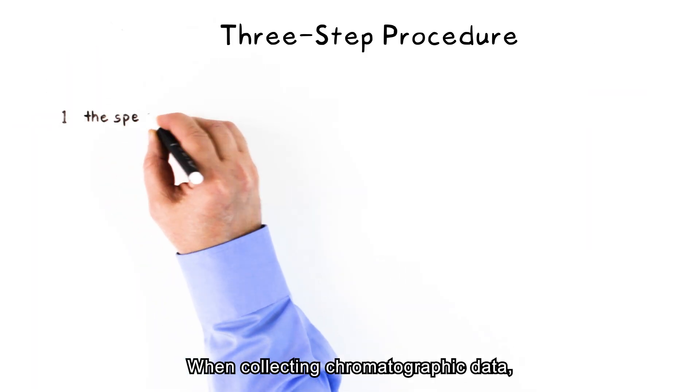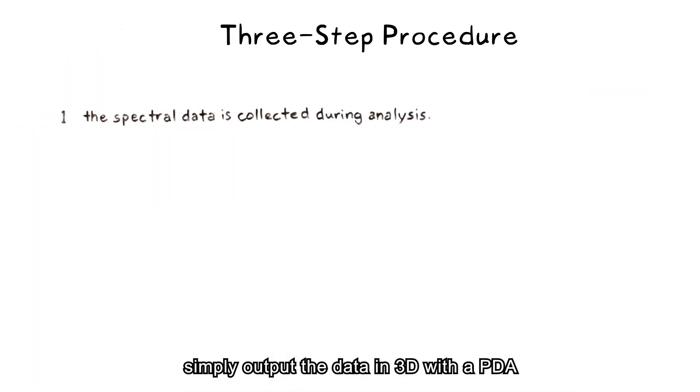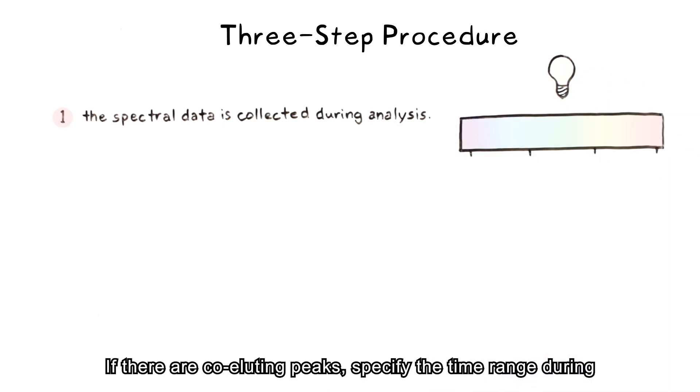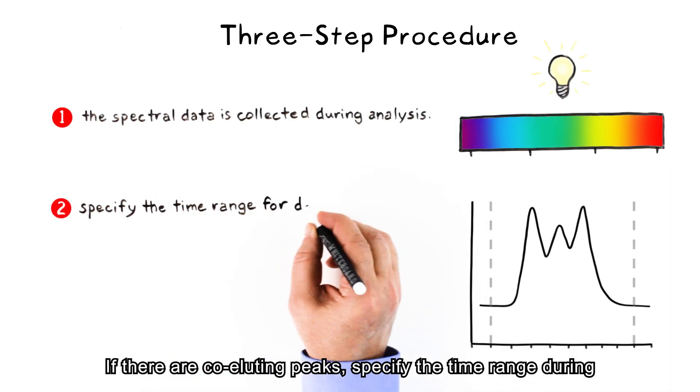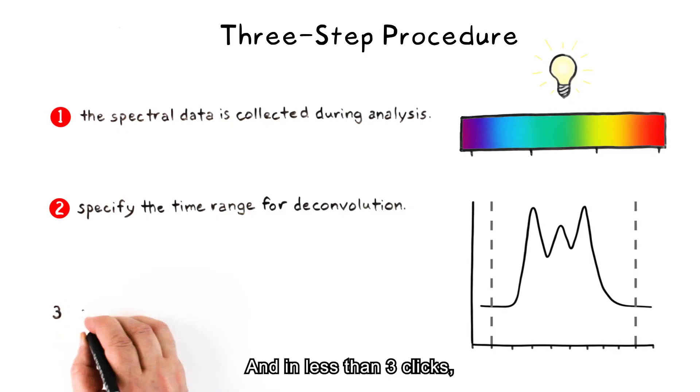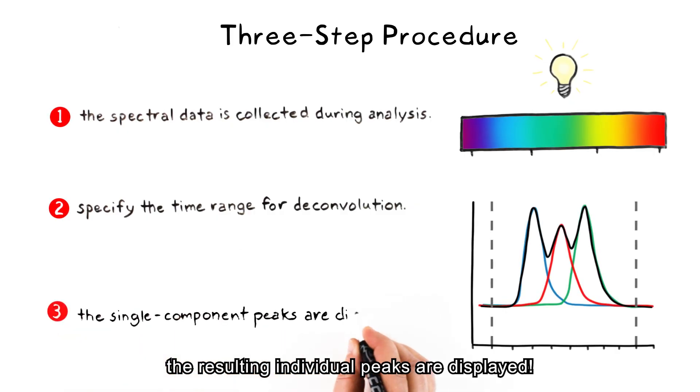When collecting chromatographic data, simply output the data in 3D with a PDA instead of using a single wavelength. If there are co-eluting peaks, specify the time range during which i-PDeA should provide mathematical resolution. And in less than three clicks, the resulting individual peaks are displayed.